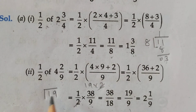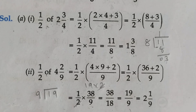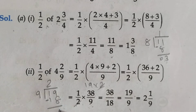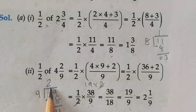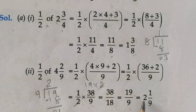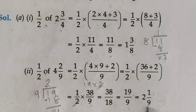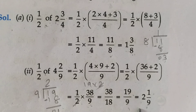19 divided by 9: 9 ones are 9, 9 twos are 18 — so remainder is 1. Quotient is 2, write down as whole number. 1 as numerator and divisor 9 as it is. It is the answer: 2 whole 1 upon 9. That is half of 4 whole 2 upon 9.